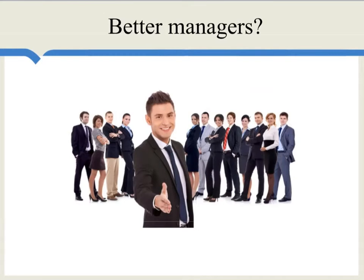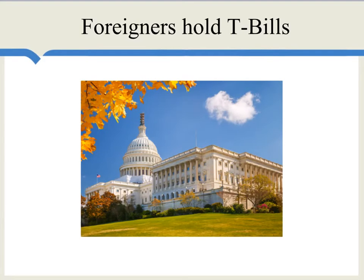It is often suggested that U.S. multinational firms have better managers, better managerial technology, or they use information technology better. This again means that the true net asset positions of those companies are stronger than mere export numbers in a given year will indicate. Think of a classic U.S. investment abroad as a branch of McDonald's selling hamburgers in Germany, while a classic foreign investment in the United States is foreigners holding T-bills. On average, McDonald's is making more money abroad than foreigners are earning holding T-bills — and adjusting for this differential is another way of thinking about the meaning of dark matter.